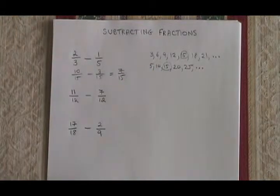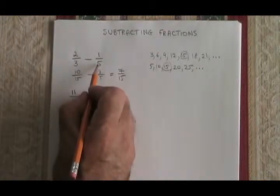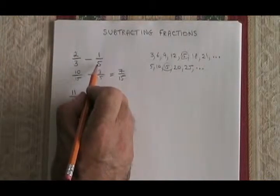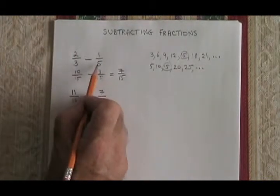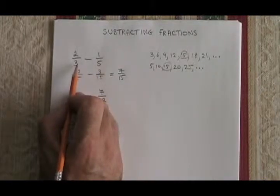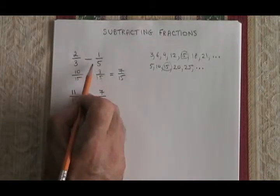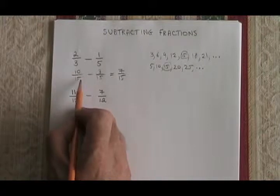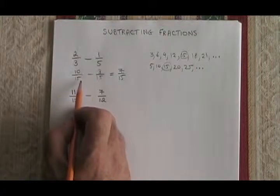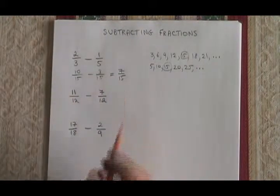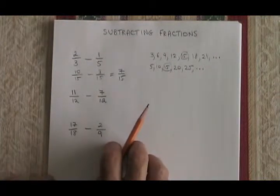Of course, there is a shortcut. 3 times 5 is 15. So we can get a common denominator simply by multiplying the 3 and the 5. If we multiply the denominators of our starting fractions, we get a common denominator, but it's not always going to be the lowest common denominator. So let's see a few more examples and see how that plays out.